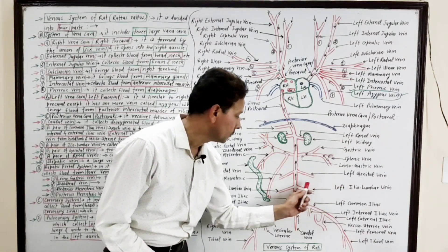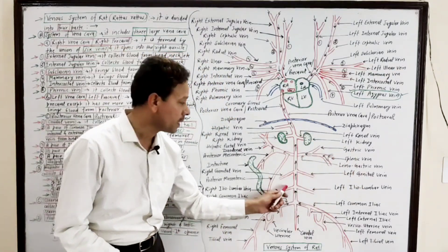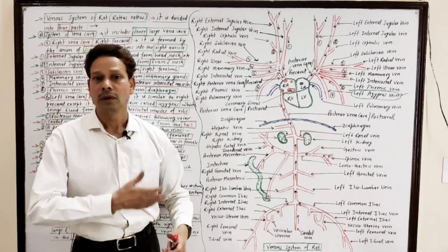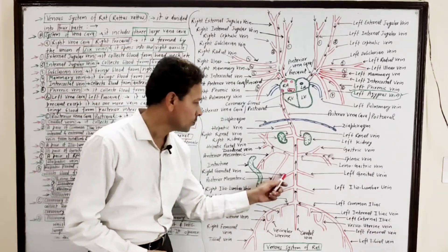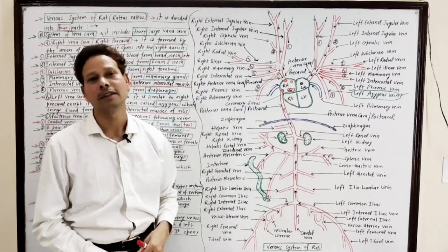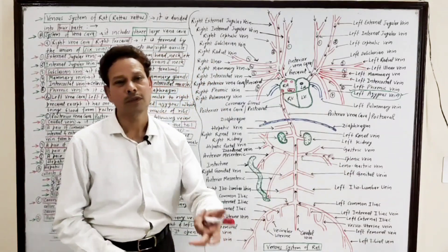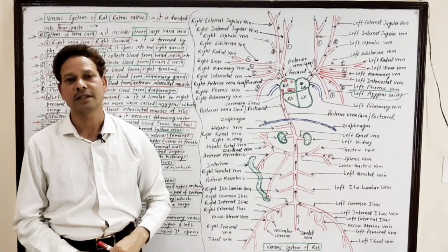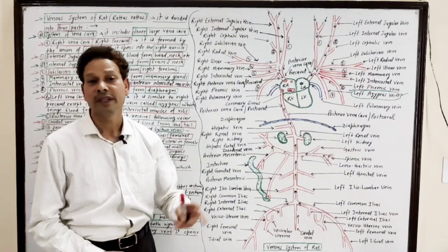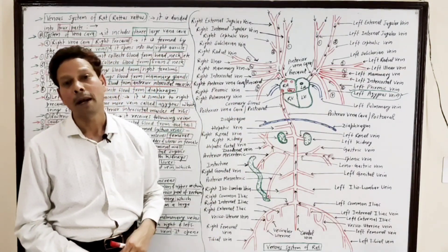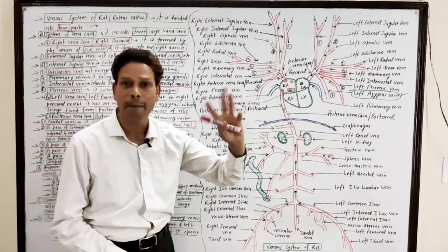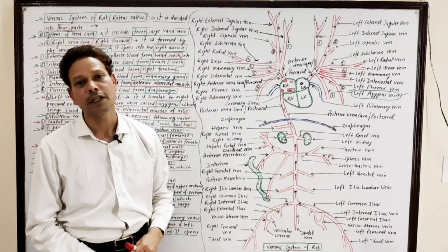Additionally, the posterior vena cava receives a pair of iliolumbar veins, which bring deoxygenated blood from the abdominal wall. Then a pair of genital veins, which bring blood from the genital regions — the gonads. Next, a pair of renal veins, which bring blood from the kidneys. And the hepatic vein, which brings deoxygenated blood from the liver.